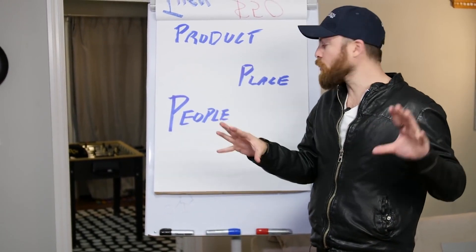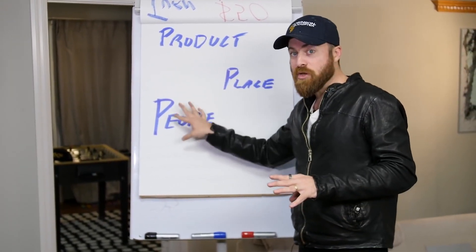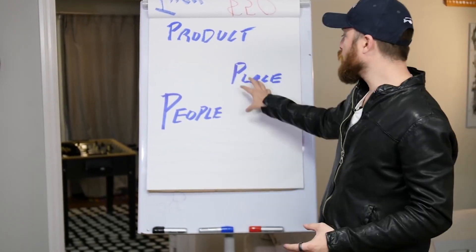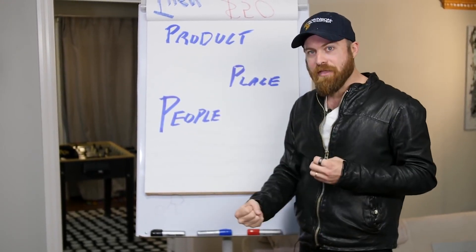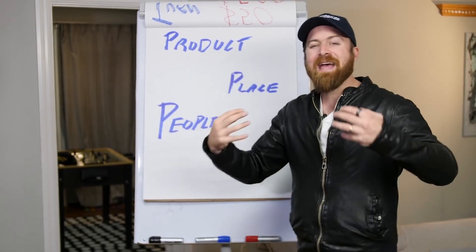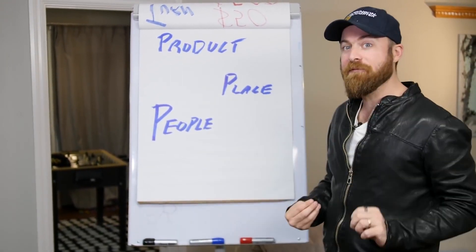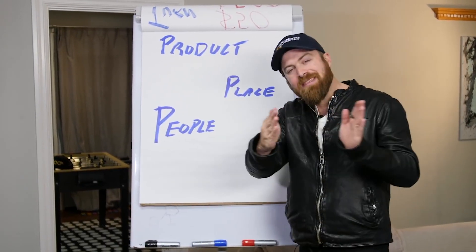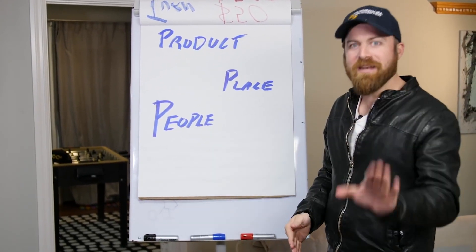Those three steps are a preview of my bigger course, but here's how it works: you need to reach people — we're going to use Google Ads for that. Then we take them from Google to a place where we can sell them, which will be a website. And we need a product that pays us commissions when it's sold — that will be an affiliate offer.